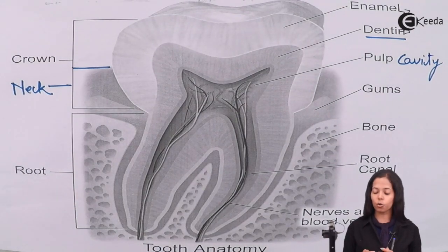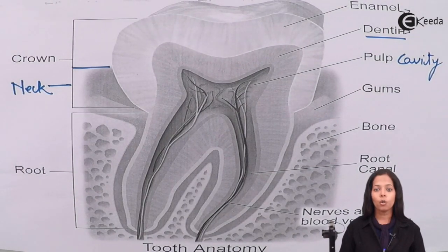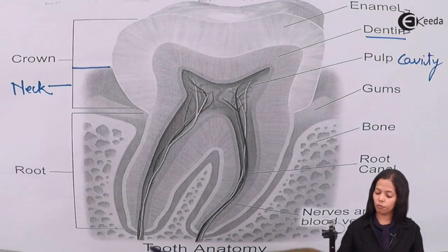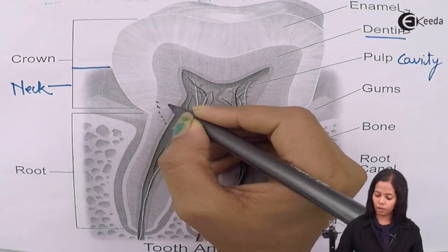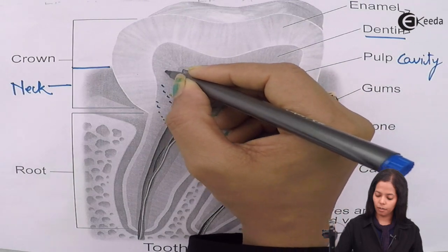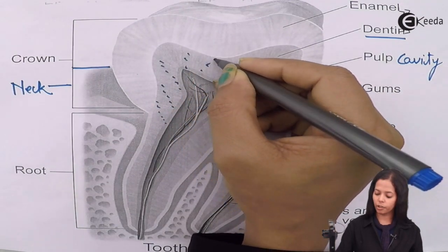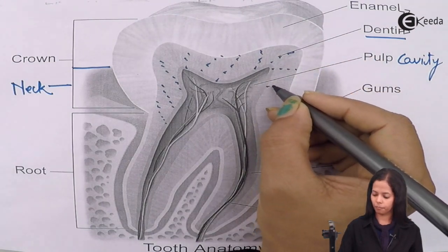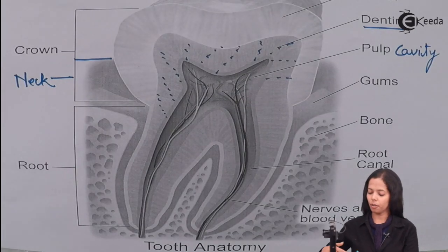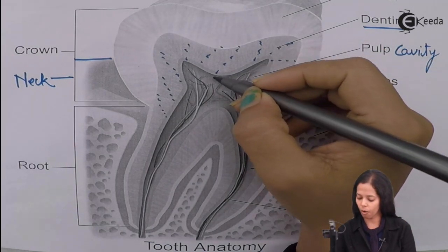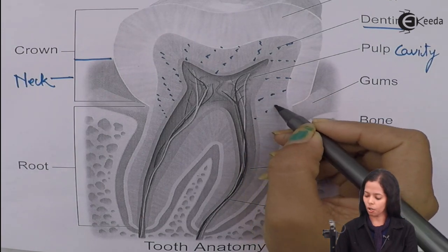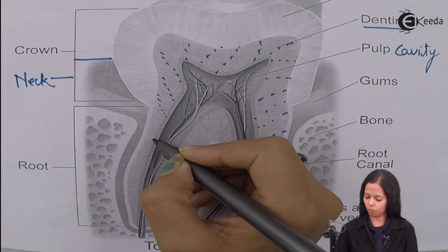Speaking about the root region, the root region shows various structures. The dentine of the root region shows a projecting structure moving towards the enamel. There will be a projecting thing coming out from the dentine region and moving towards the enamel; this is called dentine canaliculi.